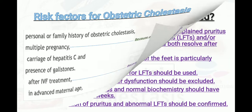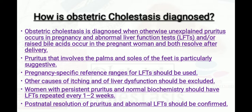Obstetric cholestasis is diagnosed when otherwise unexplained pruritus occurs in pregnancy along with abnormal liver function tests or raised bile acids, and both resolve after delivery. Pruritus involving the palms and soles is particularly suggestive. Pregnancy-specific reference ranges for LFTs should be used, and other causes of itching and liver dysfunction should be excluded.